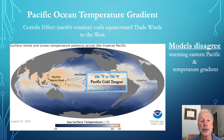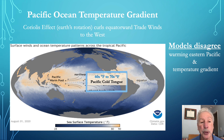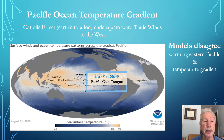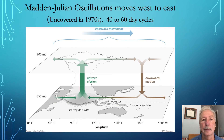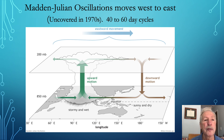Climate models disagree on what CO2 warming will do to this gradient. Some say it will be lessened, but right now that is not being observed. The Indo-Pacific warm pool provides the heat energy that is the source of two major natural cycles.